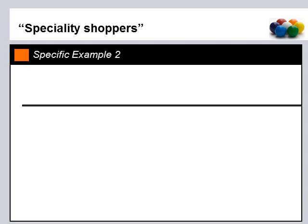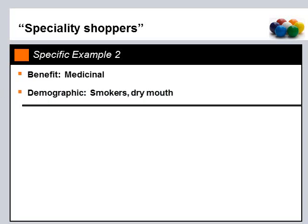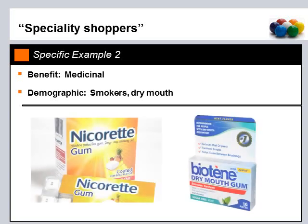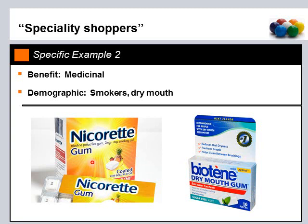Specific example number two — I went slightly out of order to build up to my favorite at the end. This is the specialty shoppers. The benefit is medicinal, and the demographic would be smokers or those with dry mouth. Here are two specific examples: on the left, Nicorette gum for those trying to stop smoking, and on the right, the Biotène dry mouth gum.